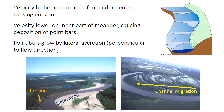In the context of lateral accretion, remember that bars in braided rivers tend to grow by downstream accretion. This is again a major distinction between the two types of rivers.